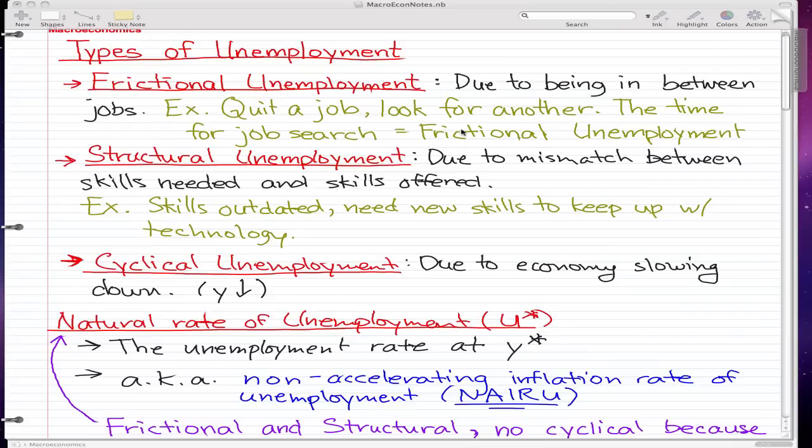The first type of unemployment is Frictional Unemployment and it is due to being in between jobs. So for example, you quit a job, you look for another job, the time for the job search is Frictional Unemployment, simple as that.